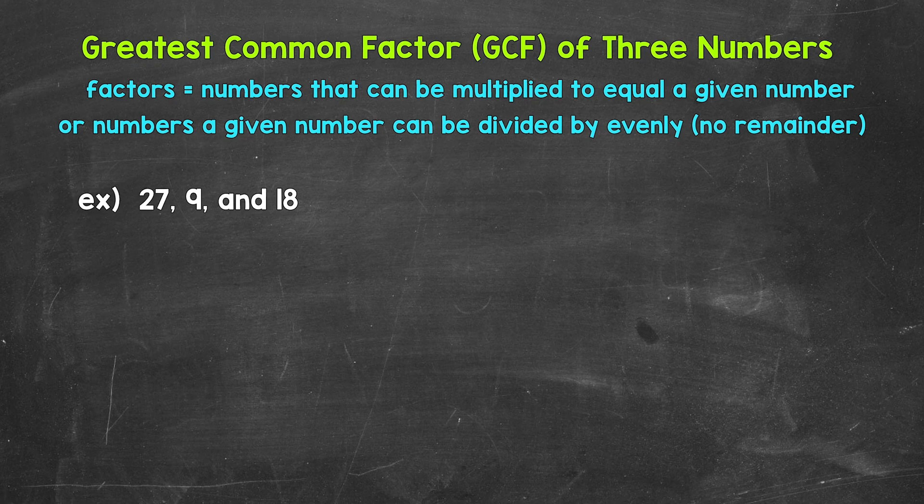Let's jump into our first example, where we will find the greatest common factor by listing the factors of each number: 27, 9, and 18.